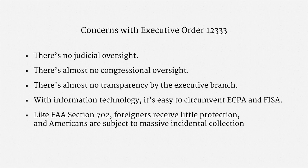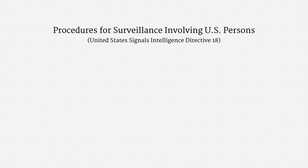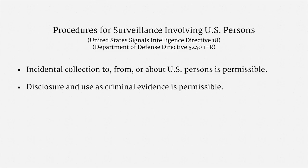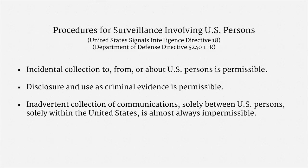Now let me say a little about the procedures that apply to Executive Order 12333 surveillance involving U.S. persons. These procedures are primarily established in two successor documents: United States Signals Intelligence Directive 18 and Department of Defense Directive 5240-1-R. Incidental collection of communications to, from, or about U.S. persons is generally permissible. Disclosure and use of intelligence information as criminal evidence is also permissible. Pretty much the only area where disclosure and use is almost always impermissible is inadvertent collection of communications solely between U.S. persons and solely within the United States.